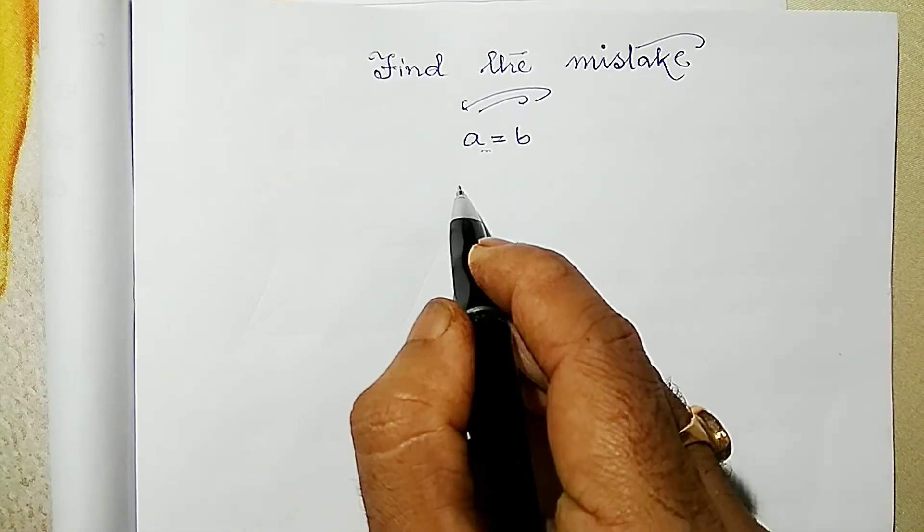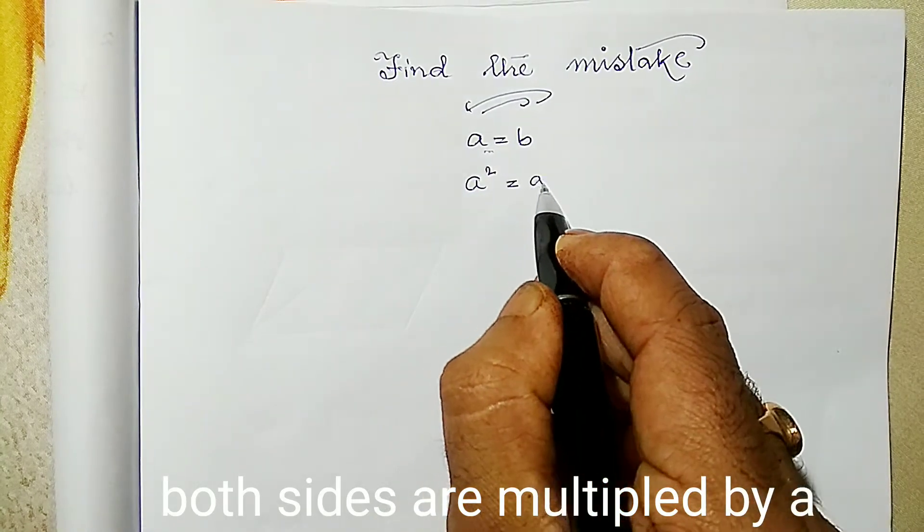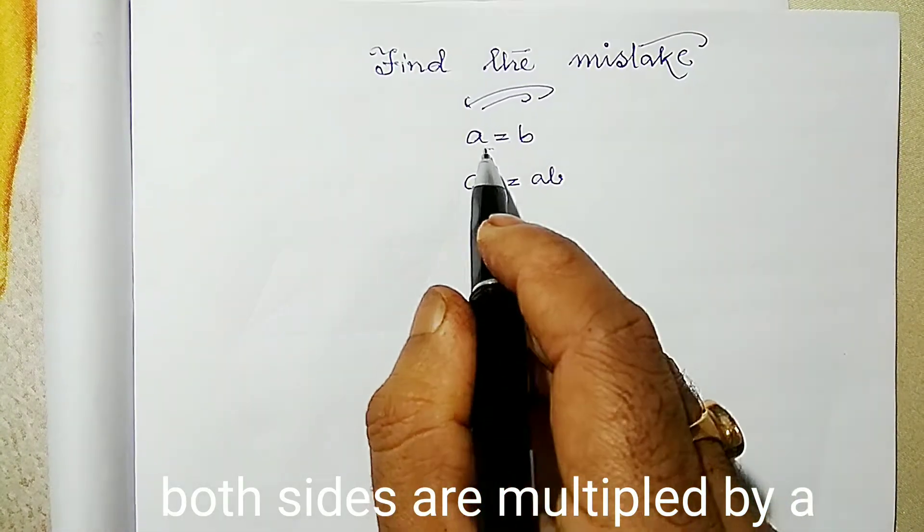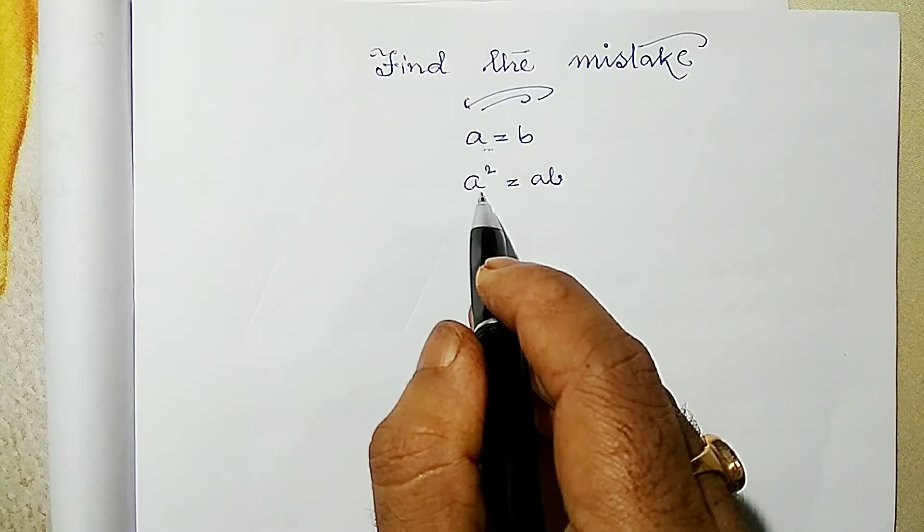That is okay because I have taken a equals to b. I am multiplying both sides by a. As a result I got a square equals to ab.